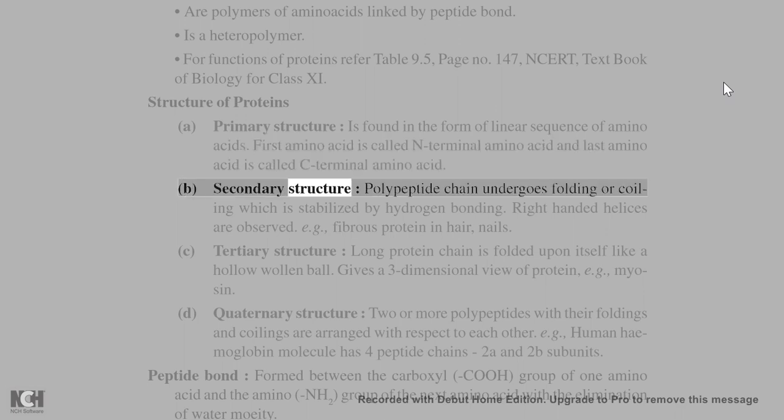Secondary structure: polypeptide chain undergoes folding or coiling which is stabilized by hydrogen bonding. Right-handed helices are observed, e.g., fibrous protein in hair, nails.